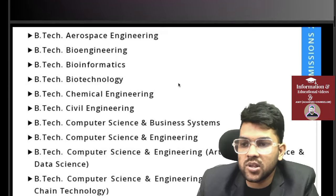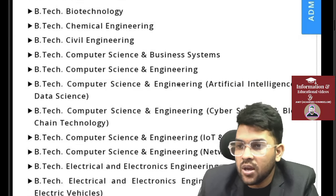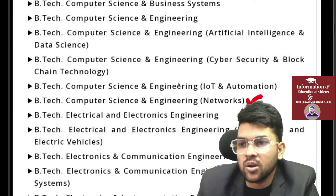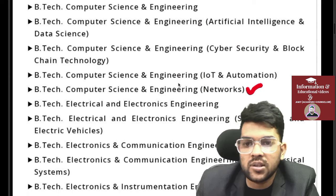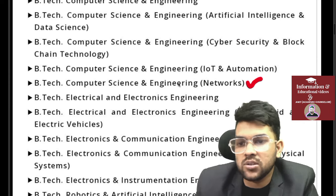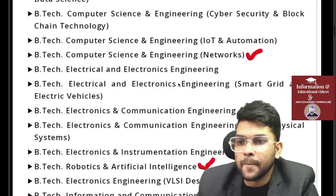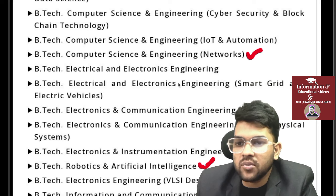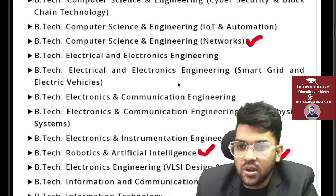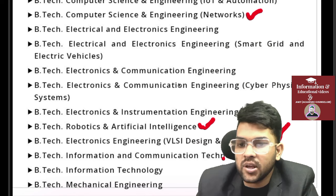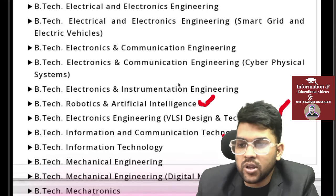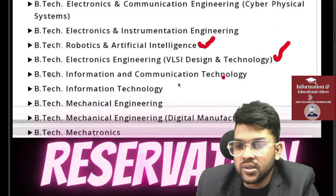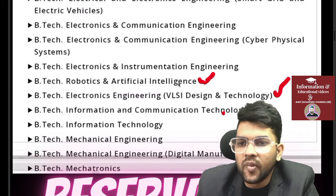The courses available include: Aerospace, Bioengineering, Bioinformatics, Biotechnology, Chemical, Civil, Computer Science, Business Systems (CSBS), Computer Science Engineering, Computer Science Data Science, Artificial Intelligence, Cyber Security, Blockchain Technology, IoT Automation. New branches added this year include Computer Science Engineering with specialization in Networks, Robotics and Artificial Intelligence, Electronics Engineering with VLSI Design and Technology, and Mechatronics.